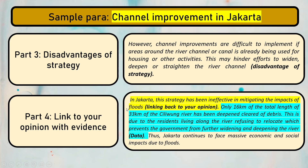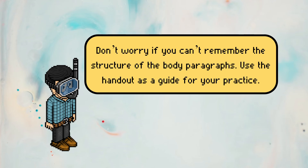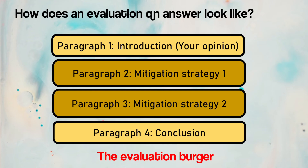Then link back to your opinion with evidence. If my initial opinion is that strategies are ineffective, I say 'this strategy has been ineffective' and give the supporting data — for example, Jakarta continues to face massive economic and social impacts due to floods. If you are confused about how to write a body paragraph, rewatch this section, try writing a paragraph on your own to practice, and use the worksheet given in class to guide you.